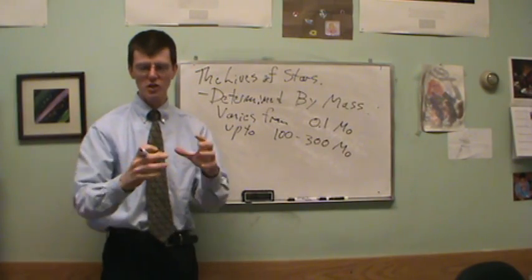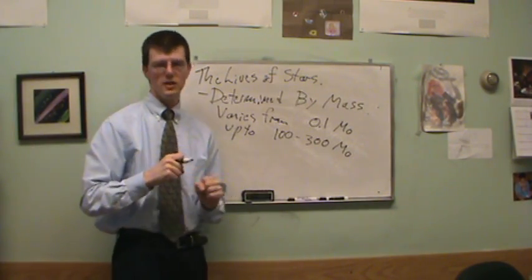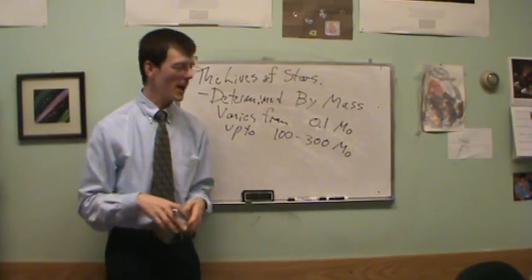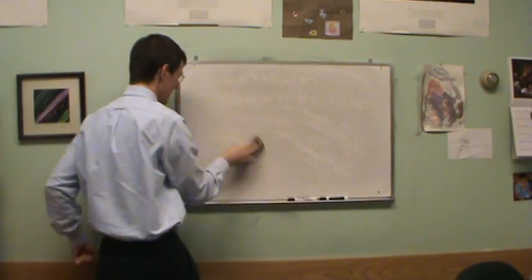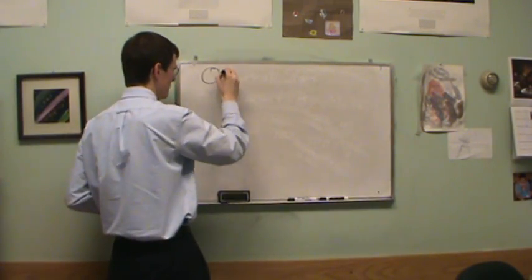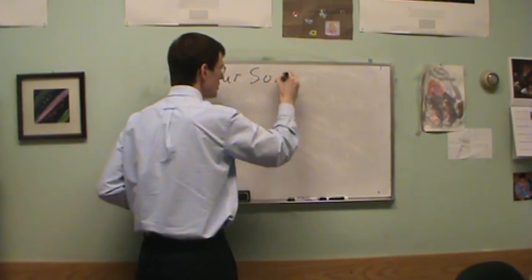So if I see a star just forming and I say, oh, this is two times the mass of our Sun, then I know what's going to happen to the star. So let's start by looking at a low mass star. Let's look at our Sun. Our Sun, which is a low mass star.